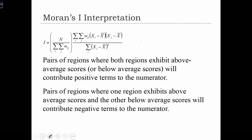Here's just what I was explaining but written out in text. Pairs of regions where both regions exhibit above-average scores, or if both regions are below average scores, these cases will contribute positive terms to the summation in the numerator. If the pair of regions is such that one of the values is high and the other is low, then we're going to have a negative term in this cross product.